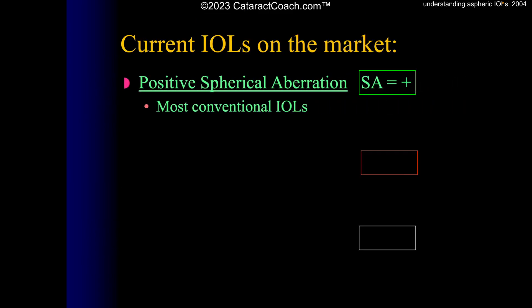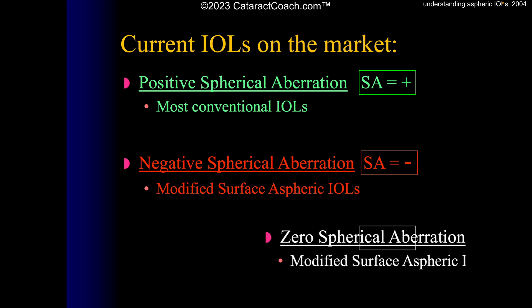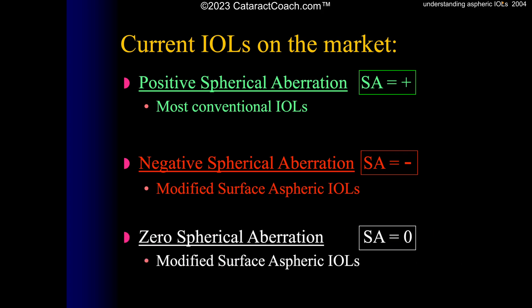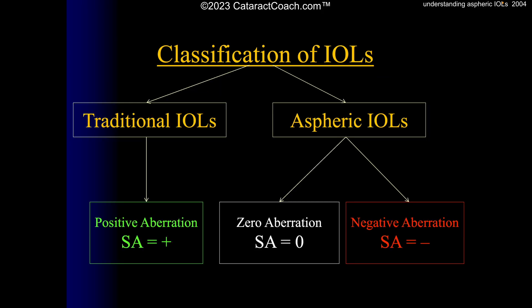What are the current lenses on the market? There are positive spherical aberration IOLs — most of the older conventional lenses popular in the mid-2000s. Now there are negative spherical aberration IOLs and zero spherical aberration IOLs where the surface of the IOL is modified. Today in 2023 the vast majority of lenses we use are aspheric — mostly negative spherical aberration, but some are zero spherical aberration. Traditional older lenses have positive spherical aberration; aspheric IOLs have either zero or negative spherical aberration.